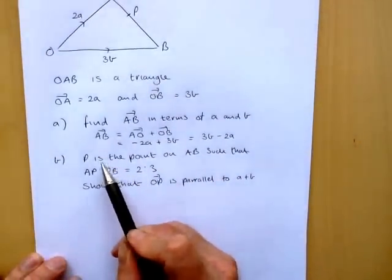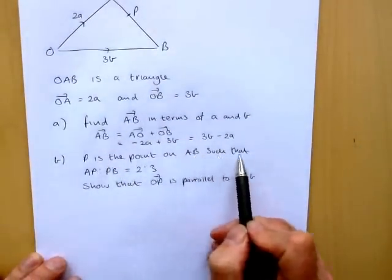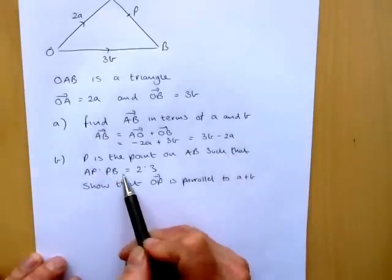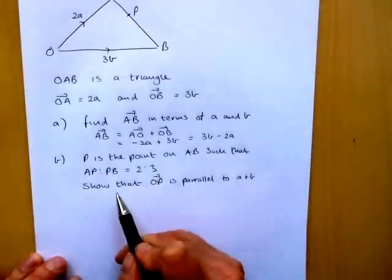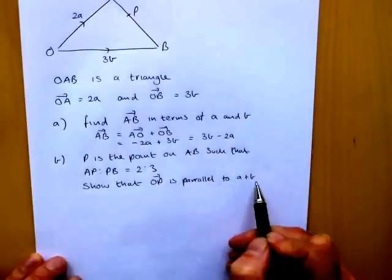Now the second piece of information we've given is that P is the point on AB such that AP to PB is 2 to 3. We've got to show that OP is parallel to A plus B.